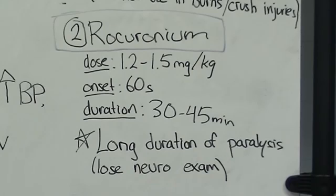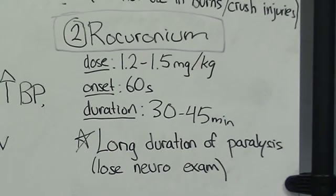This long duration of action means there is prolonged paralysis when you use rocuronium, especially in patients with liver failure. This means there can be a loss of neurological exam that may be important for neurology or neurosurgery consults. Sedation must be titrated so you don't have prolonged paralysis with inadequate sedation. There is currently a reversal agent called Sugammadex, but we'll save that for another lecture.